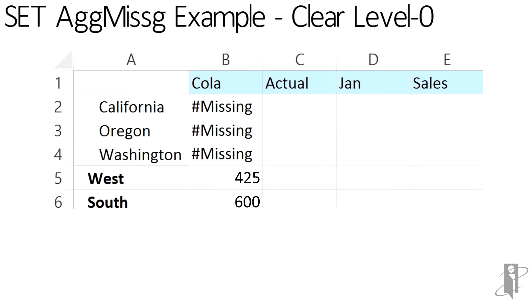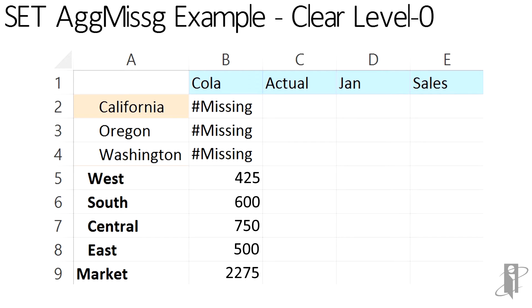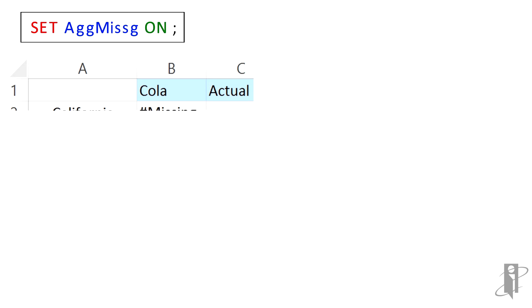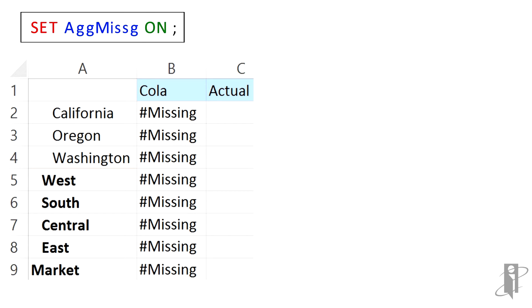Now say we did a level zero clear, setting California, Oregon, and Washington equal to #MISSING. Here's where it differs. If we now re-aggregate and we have setAggMissing set to on, it will take the #MISSING at those bottom level members and overwrite the upper level members. So we will not preserve what was saved at west, south, central, east, and market.